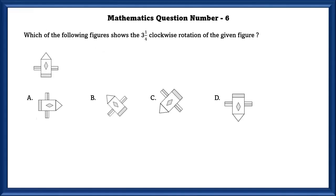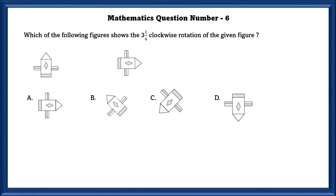Mathematics question number 6. Which of the following figures shows the 3 and 1/4 clockwise rotation of the given figure? If we do one full turn, the figure will come to its original position. So 3 full turns is equal to the original position. So the one we need to see here is 1/4. If we do the 1/4 rotation, we will get option A.